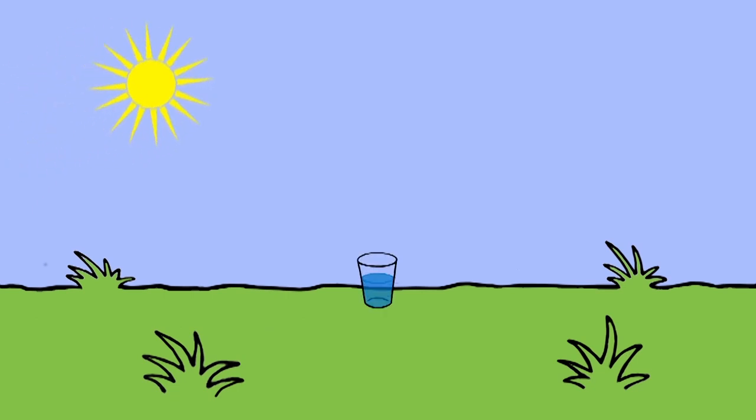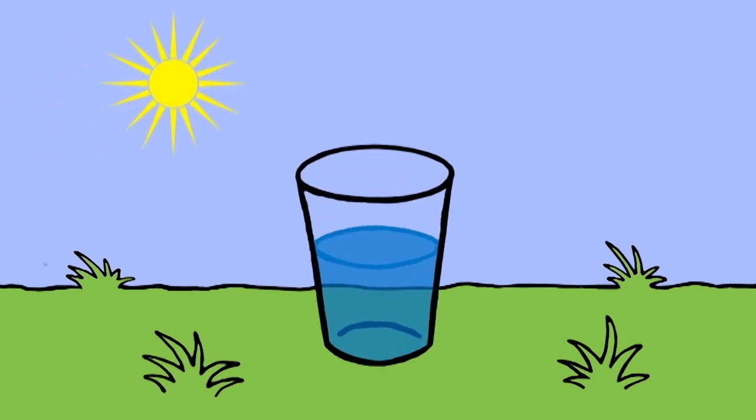You can see this effect for yourself. Take a cold glass of water and place it outside. Water vapour will condense on the outside of the glass. The water does not leak through. It came from the warm air and condensed on the outside of the cold glass.